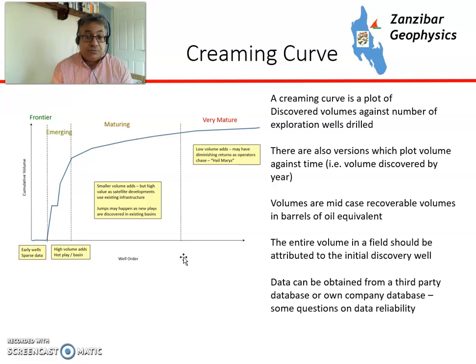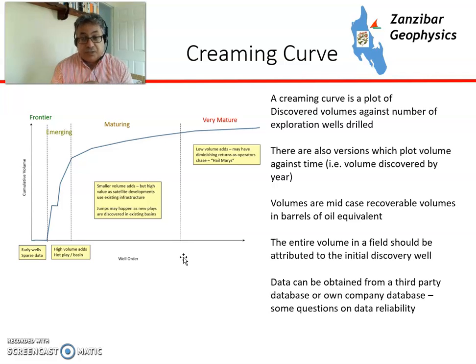The entire volume of the field is attributed to the discovery well. So if a field was drilled, say, in 1975 and you had a well in 1989 that significantly doubled the size of the field through reserves growth, the volume is still attributed to 1975.